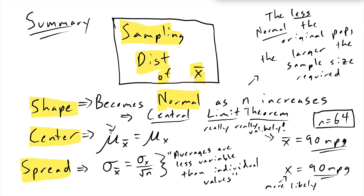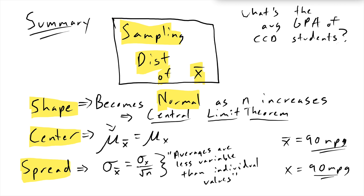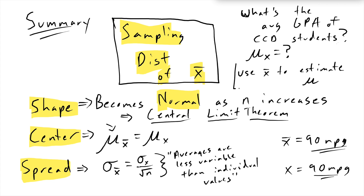These are all really important ideas we'll use for the rest of the semester. If we wanted to know the average GPA of students at CCD, that's a parameter — that's mu x. So how would we find it? We'd take a sample and use x-bar — our sample mean — to estimate the truth. We might ask 20 students their GPA and use the mean of our sample to estimate the mean of our population. We need to know about the sampling distribution of x-bar to talk about how close our sample mean is to the true mean.